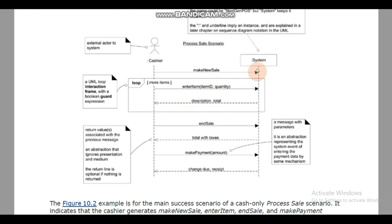If you can enter multiple items, the system will return description and total as a response each time. This loop will continue until the number of items is finished. Then, after the loop ends, the next message sent from cashier to system will be 'end sale'.